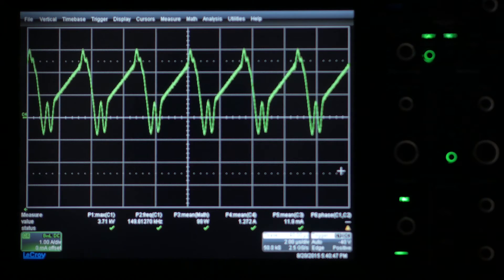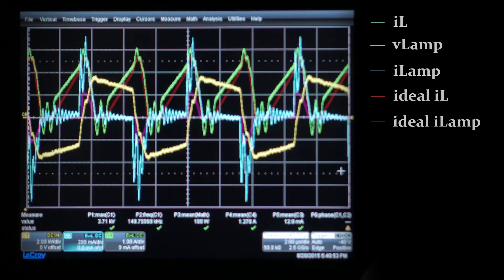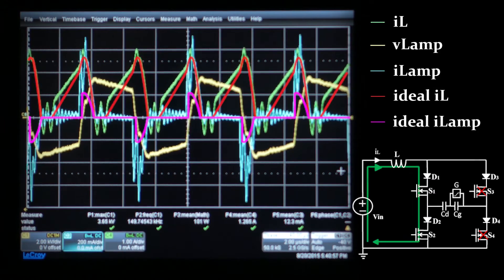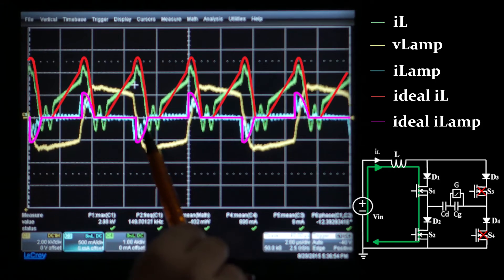The green signal shows the input current. It can be clearly seen the different sub-intervals of commutation. First, there is the charging sub-interval, in which the current increases linearly.